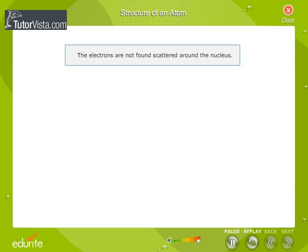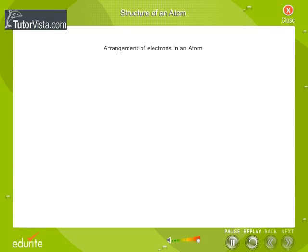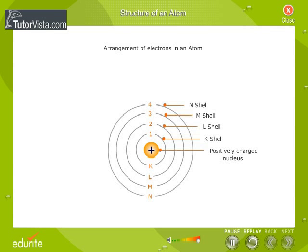The electrons are not found scattered around the nucleus. They are arranged in different shells around the nucleus as seen here.